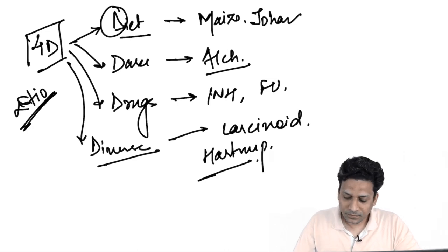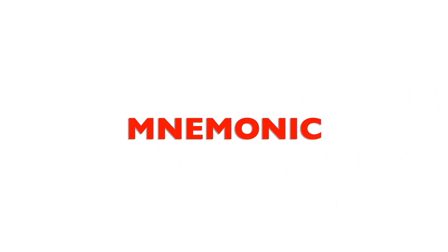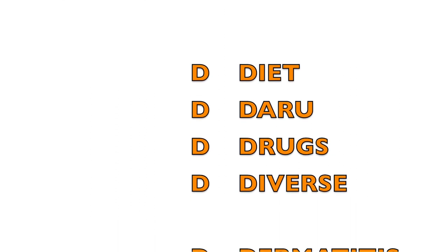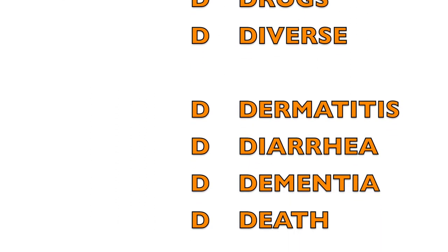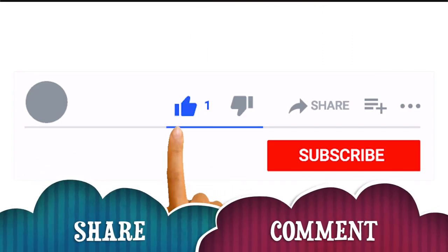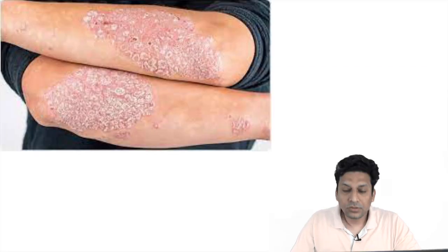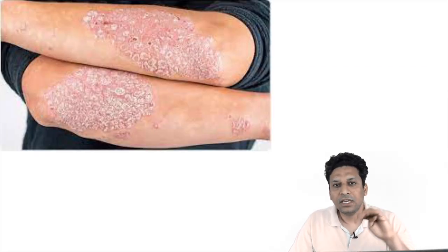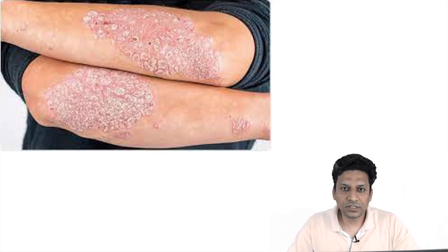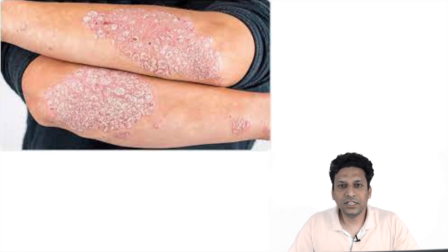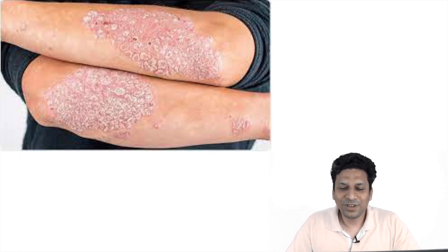I hope this was helpful. You just need to remember four Ds in the etiology and four Ds in the clinical features. Now this is the image for today and it is a very simple image — I hope all of you can diagnose this condition. Tell me the name of this condition in the comment box below. Thank you very much.